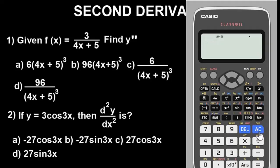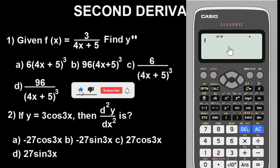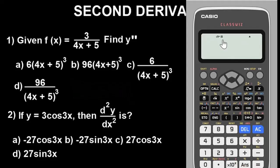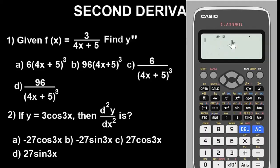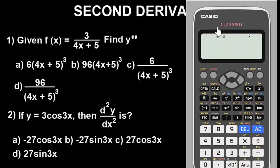Having done that, you need to put your calculator in Radian mode — very important. You can see the calculator is in Degree mode by default. To solve differentiation, you need Radian mode. To switch, press Shift then Menu. Go to Angle — that's category 2 — and Radian is also category 2. The calculator is now in Radian mode.